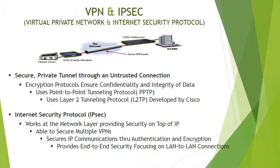Next we have VPN, or Virtual Private Network, and IPSec, Internet Security Protocol. Virtual Private Networks secure a private tunnel through an untrusted connection. Encryption protocols ensure the confidentiality and integrity of the data through these tunnels. VPNs use Point-to-Point Tunneling Protocol (PPTP) and Layer 2 Tunneling Protocol (L2TP), which was developed by Cisco. IPSec works at the network layer providing top security on top of IP. It is able to secure multiple VPNs, secures IP communications through authentication and encryption protocols, and provides end-to-end security focusing on LAN-to-LAN connections.